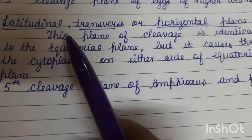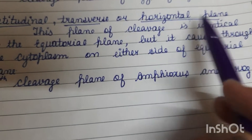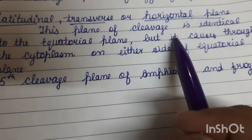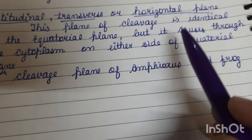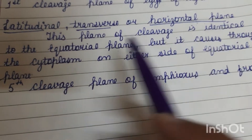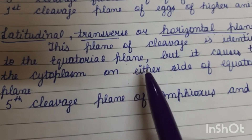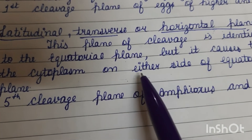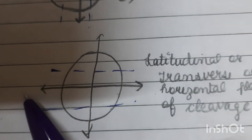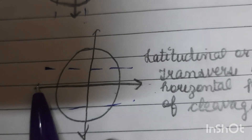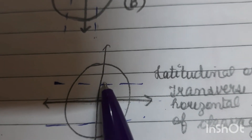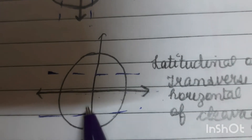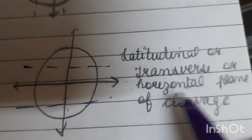The last plane of cleavage is the latitudinal, transverse, or horizontal plane. This type of cleavage is similar to the equatorial plane, but with a differentiation — it passes through the cytoplasm on either side of the equatorial plane, not exactly at the equator. So, looking at the diagram with the animal pole and vegetal pole, this plane is like the equatorial plane but shifted to the left side or right side of it.